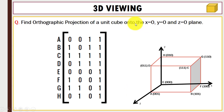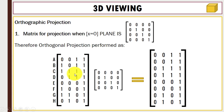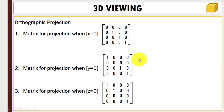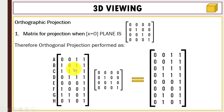To find the orthographic projection for this unit cube at x=0, we will multiply the unit cube matrix we constructed with the projection matrix, and after multiplication you will get the resulting matrix — that is the orthographic projection performed when x=0. Similarly, to find the orthographic projection for y=0 and z=0, you multiply those respective projection matrices with the unit cube matrix.